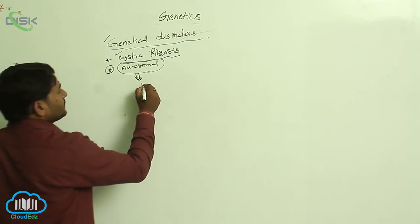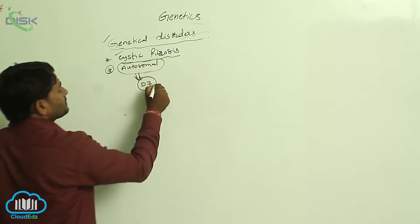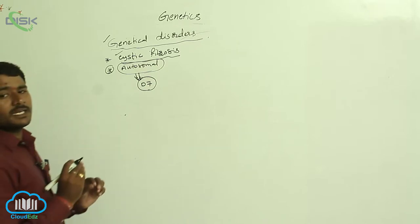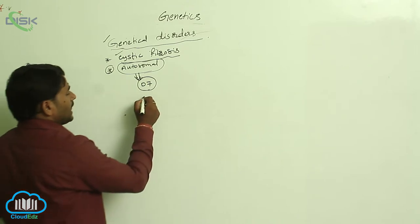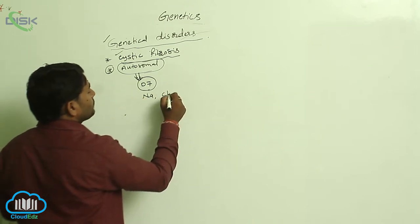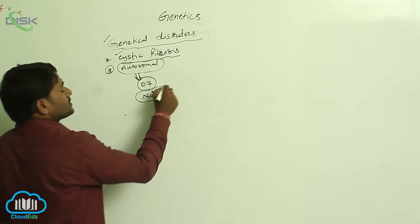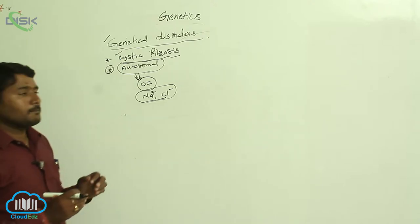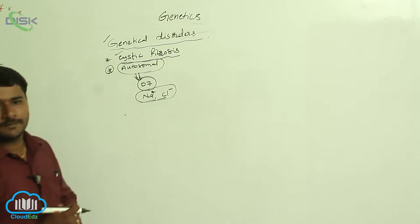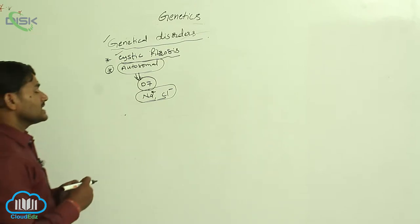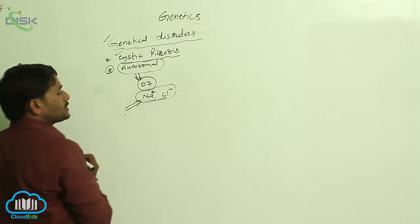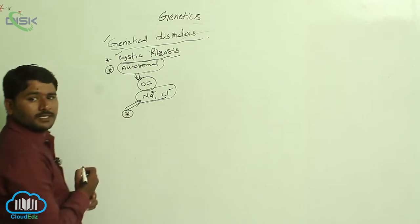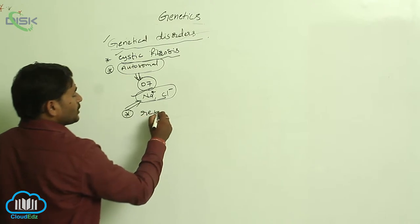Due to the recessive allele of a gene present on the 7th chromosome, there is a gene responsible for the absorption of sodium and chloride ions. Sometimes when this gene, which is responsible for salt absorption, undergoes mutation, the salts undergo a process called resorption.